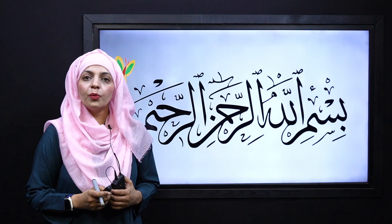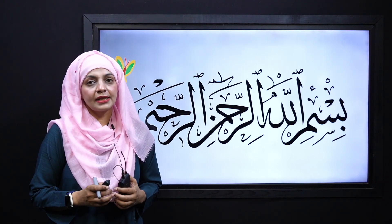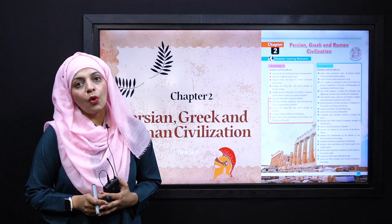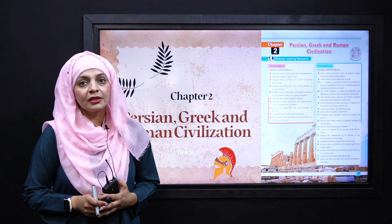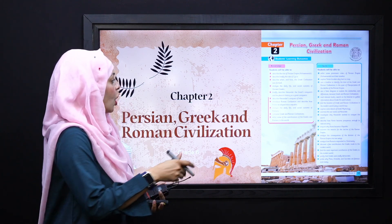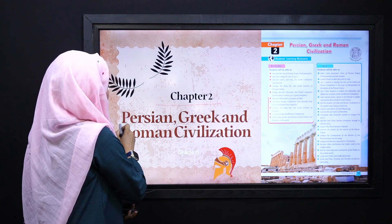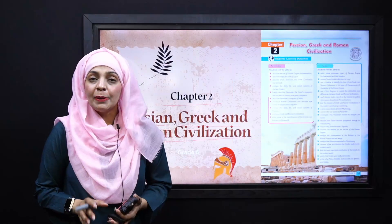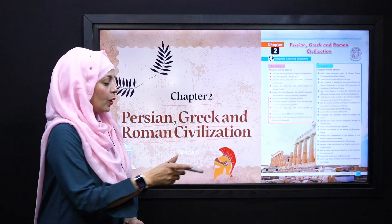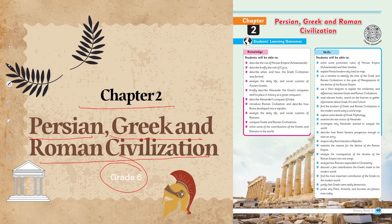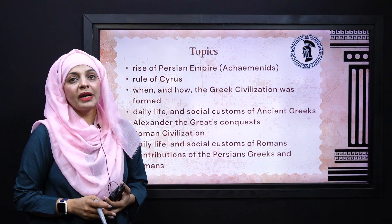Bismillahirrahmanirrahim. Assalamu Alaikum, I hope you all are fine and staying safe and happy. I am your history teacher, Miss Farheen, and I welcome you all to your history class. Today I am going to give you a complete introduction of Chapter Number Two, in which we will be reading about Persian, Greek, and Roman civilizations. Quickly pause the video and open your Grade 6 history books.